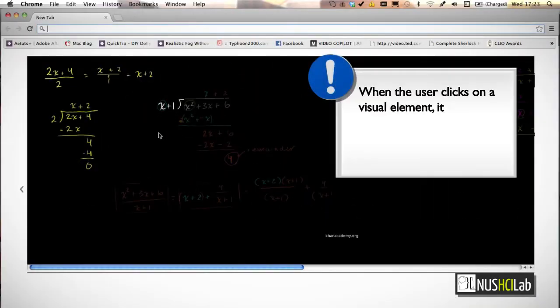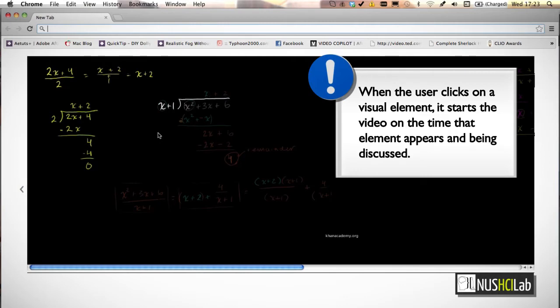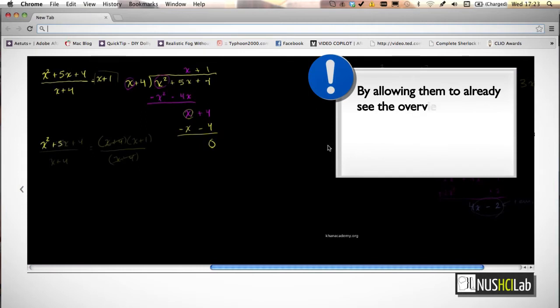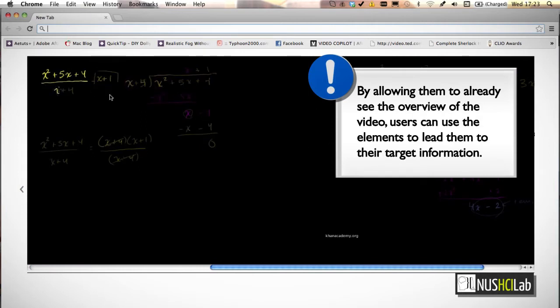x plus 1 into x squared plus 3x plus x plus 4 over x over x plus 4. So 1, 2, 3.